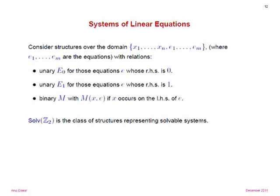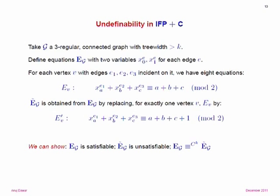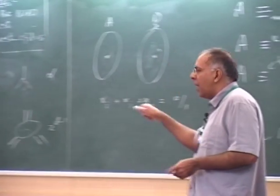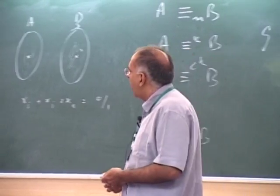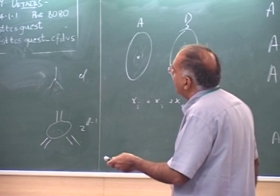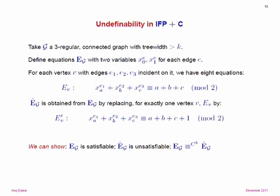The problem is: given a structure like this, does it represent a feasible system of equations? That problem is decidable in polynomial time but not expressible in fixed-point with counting. The proof is very much inspired by the Cai-Fürer-Immermann construction, but instead of graphs we end up with systems of equations. Start with a three-regular connected graph of tree-width greater than K.